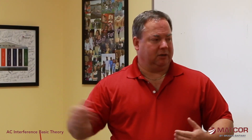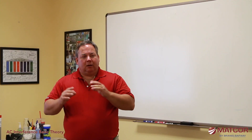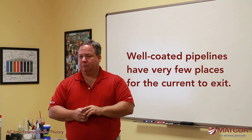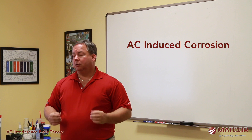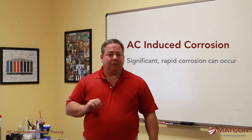AC induced corrosion is the effect that occurs when the pipeline picks up this AC current. The AC gets on the pipeline and has to leave at some point — it can't just stay on the pipeline. So this induced AC is going to dissipate back to earth, and eventually back to the grounding system of the substation of the AC transmission facility. With well-coated pipelines, there are very few places for that current to exit, and that's where AC induced corrosion starts.